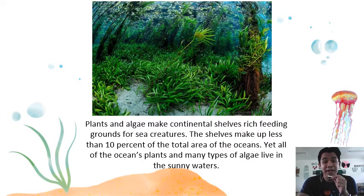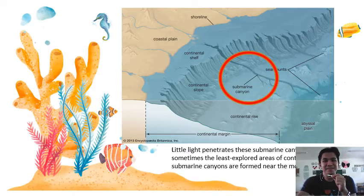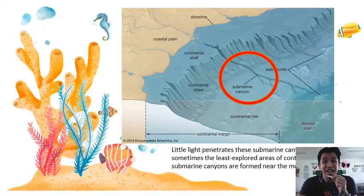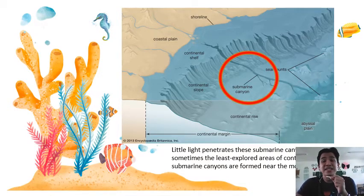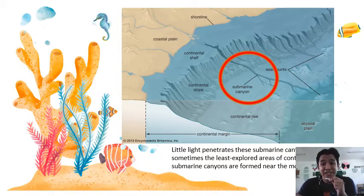The shelves make up less than 10% of the total area of the oceans, yet all of the oceans' plants and many types of algae live in the sunny waters. In some places, deep canyons and channels cut through the continental shelves. Little light penetrates these submarine canyons, as you can see in the picture, and they are sometimes the least explored areas of continents.